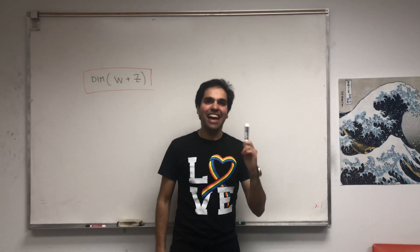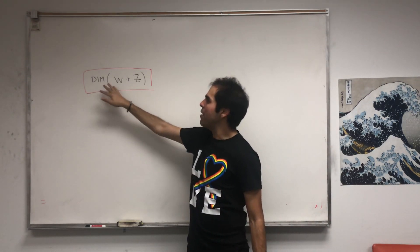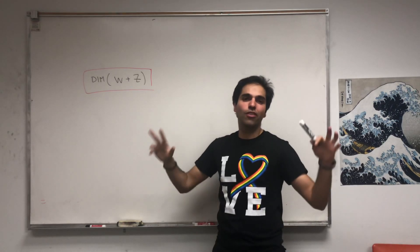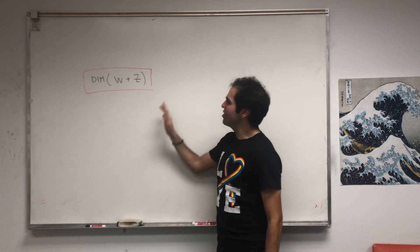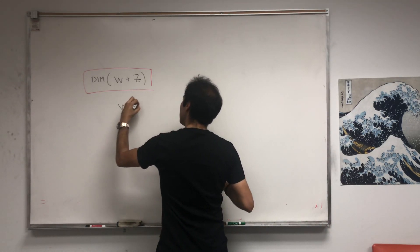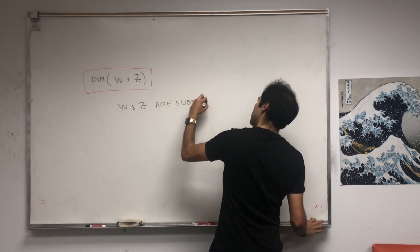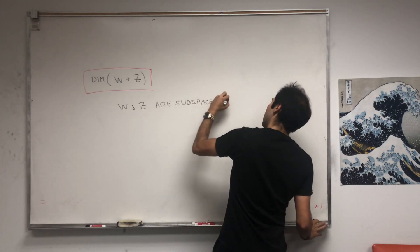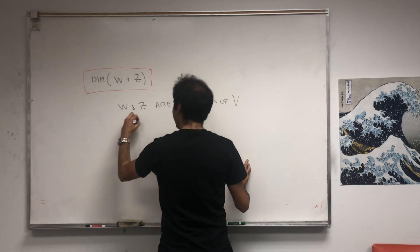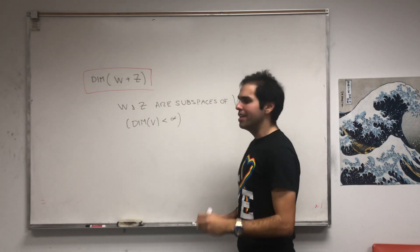Thanks for watching. Today I want to give you a very neat result that relates the dimension of the sum of two subspaces with the dimension of each subspace. So let me just recall some notation. Here W and Z are subspaces of a vector space V, and for this video we assume that V is finite dimensional, so the dimension of V is finite, and also the dimension of the subspaces is finite.